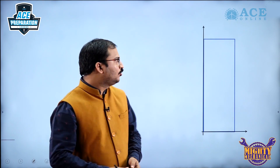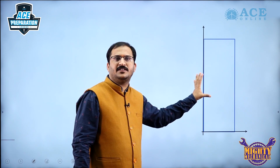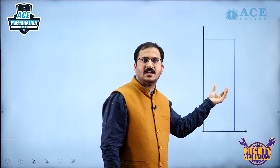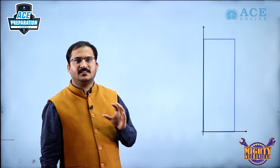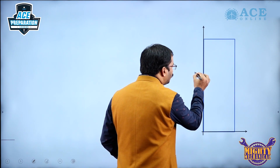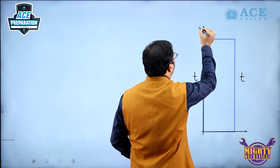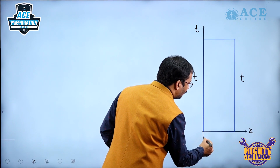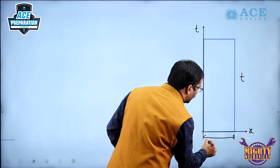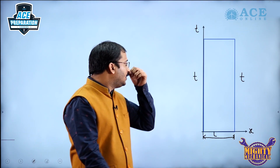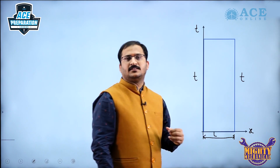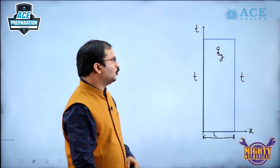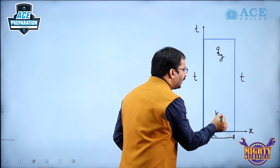Here, we are going to consider a plane wall under one-dimensional condition. Our assumption is we consider steady state, there is internal heat generation, and both sides of the wall are at the same temperature. This is the temperature axis and this is the x-axis. The thickness of the wall is taken as L. The internal heat generation is Q and the thermal conductivity is K.